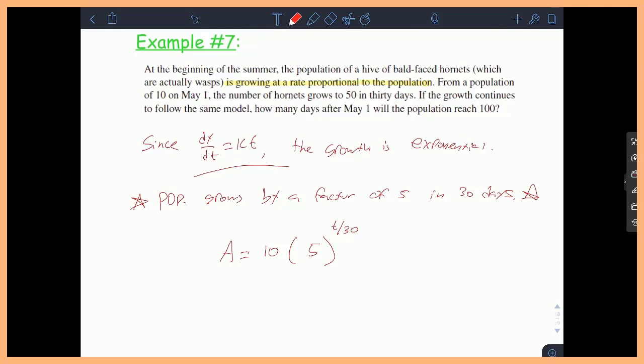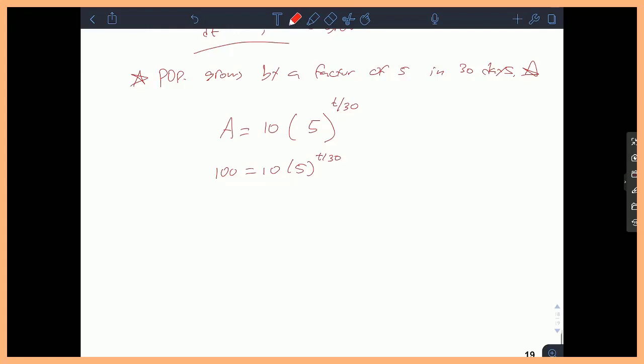And if I plug 100 in for A, my job is to solve for T. So these problems are very familiar. I'm sure you remember these in pre-calc. If you want to solve for T, first thing you could do is divide by 10, and that's going to give you 10 is equal to 5 raised to the T over 30.